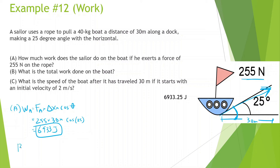Part B: what is the total work done? There are a few forces acting — force of gravity straight down and force normal going up, each 400 N. However, the work done by gravity is zero because it has a 90 degree angle with the displacement, and the work done by normal force is also zero for the same reason. So the total work is only done by the sailor: 6,933 Joules.